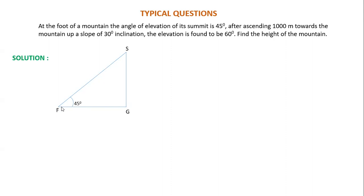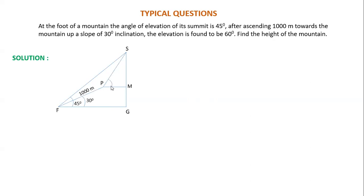From here he observes the angle. He walks up the slope up to a point, say P. The distance he has walked is 1000 meters. The slope angle is 30 degrees. Now the person is standing at point P — the person who was at F has moved to point P. From here he looks again at the summit and measures this angle to be 60 degrees. Drop a perpendicular from P.